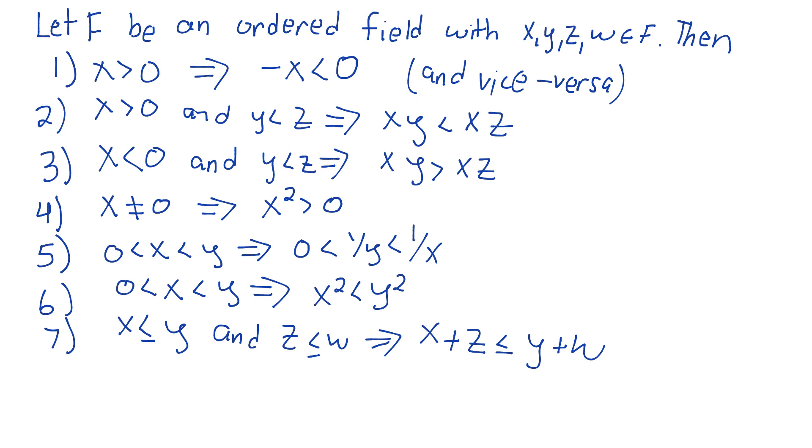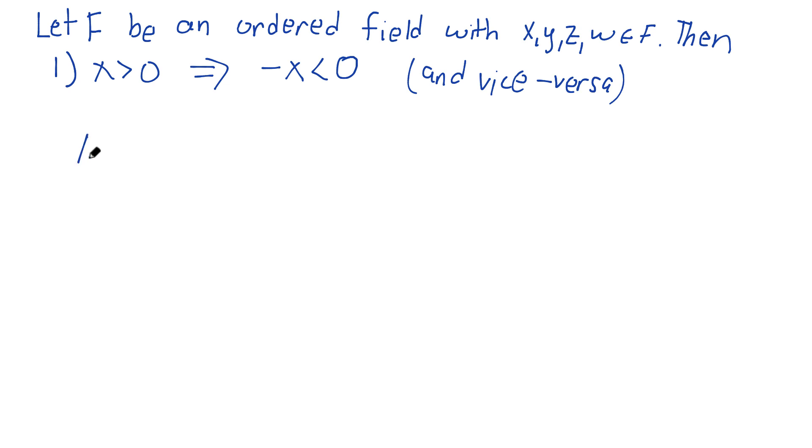But maybe we'll just prove number one here for you. So for number one, we assume that x is in our ordered field, and that x is positive. Okay, so this is my only assumption, along with the definition we had of an ordered field. Now, if you remember, what was the first definition of the ordered field? That for any x, y, and z in F, with x being less than y, this implies that x plus z is less than y plus z. This was our first condition of being an ordered field. Now, we also have the fact that, well,